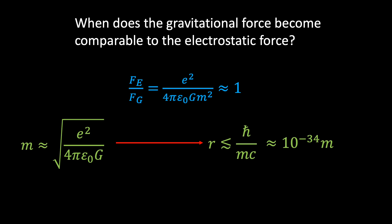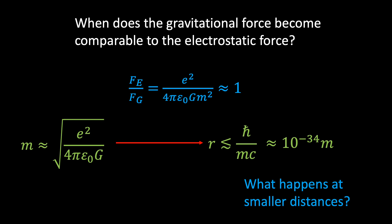When the dust settles, we see that the two electrons would need to be squeezed to an incredibly small separation distance of roughly 10 to the minus 34 metres for the two forces to become comparable. What happens if we squeeze the electrons even closer still? The gravitational force will continue to increase. But can this increase continue forever? It turns out the answer is no. Nature conspires to place a fundamental limit on how close we can squeeze the two electrons together, and it does so by invoking the general theory of relativity and one of nature's most mysterious objects: a black hole.